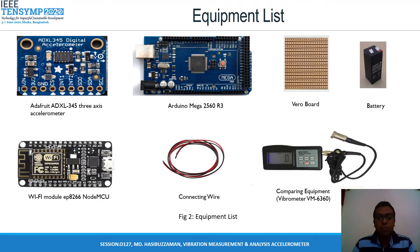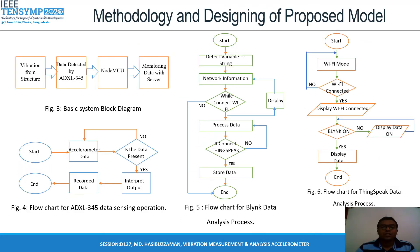These are the equipment we use to make our project successful. The methodology and designing of the proposed model are discussed in the slide. In Figure 3, this is the block diagram of the basic system of our proposed model. The hardware is designed with an ADXL345 accelerometer that will measure the vibration coming from different types of vibrating objects. The accelerometer is connected with Arduino, which will receive the data, and finally by serial communication, the data will be sent to the server via ESP8266 NodeMCU.